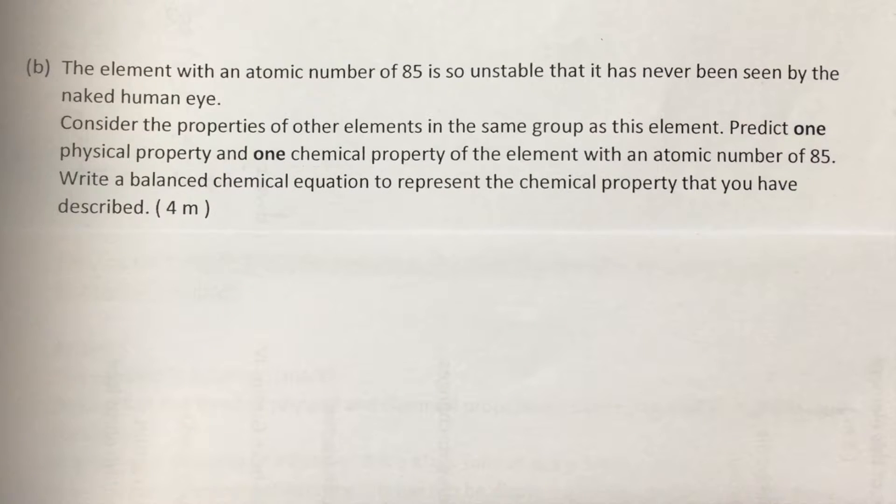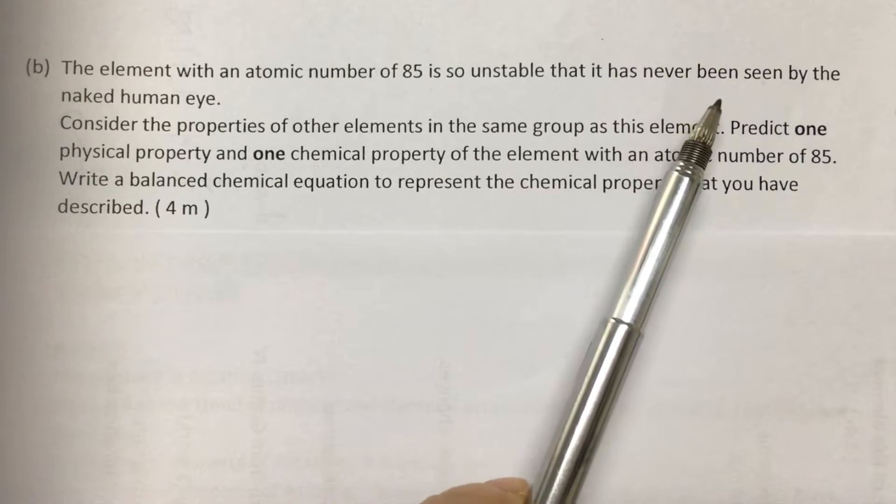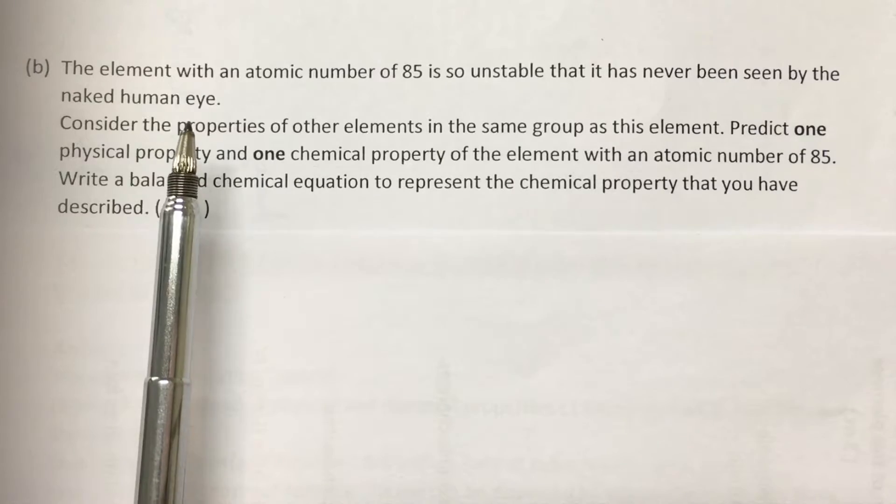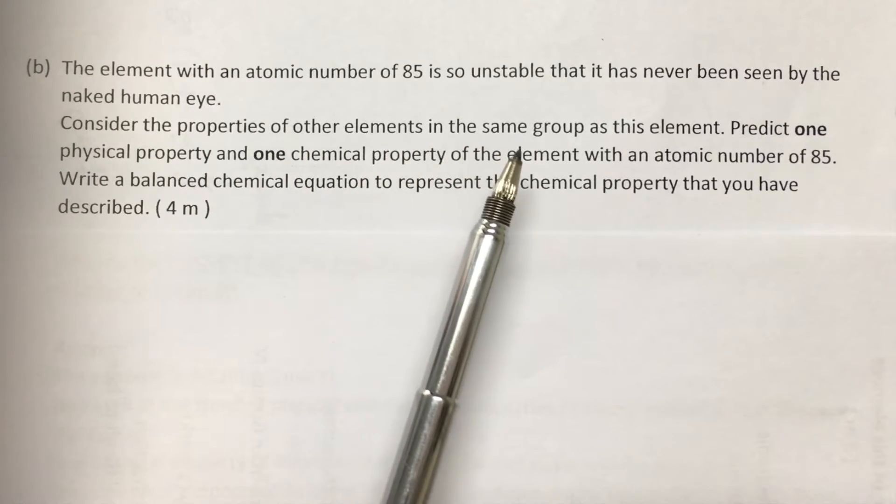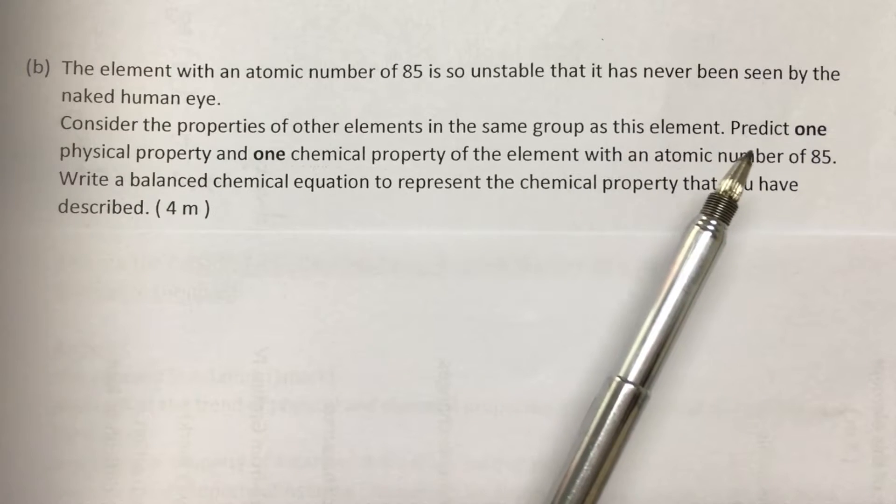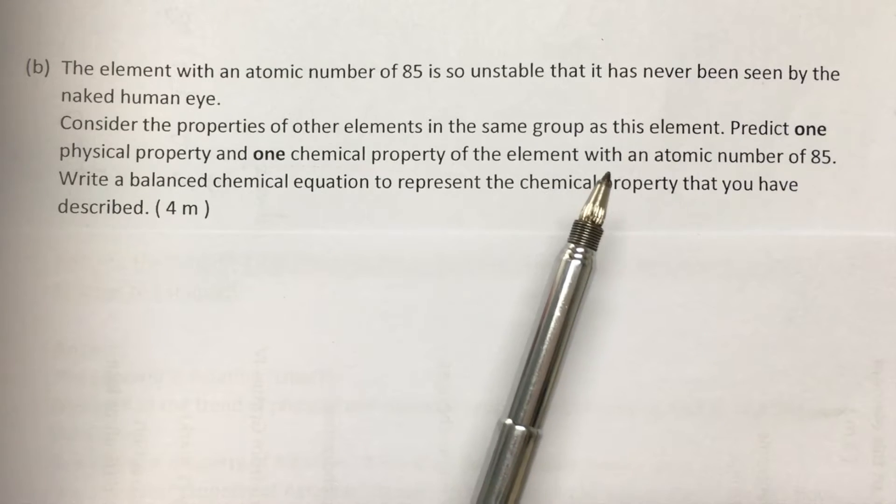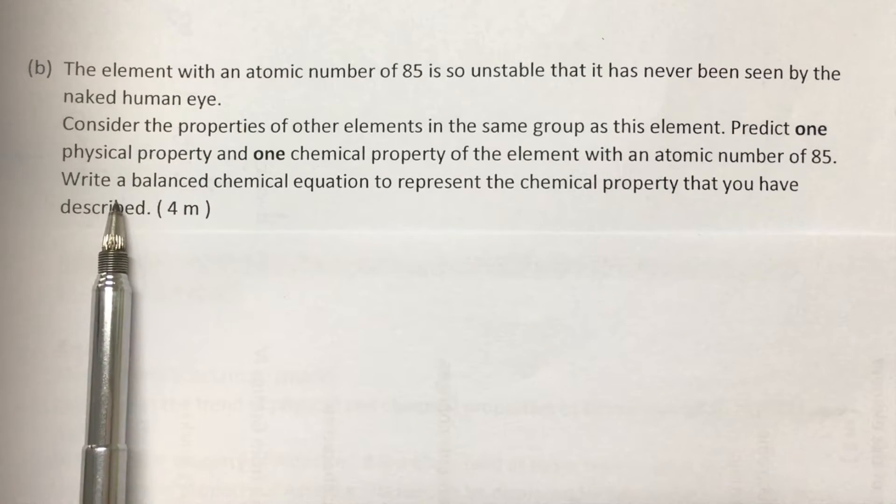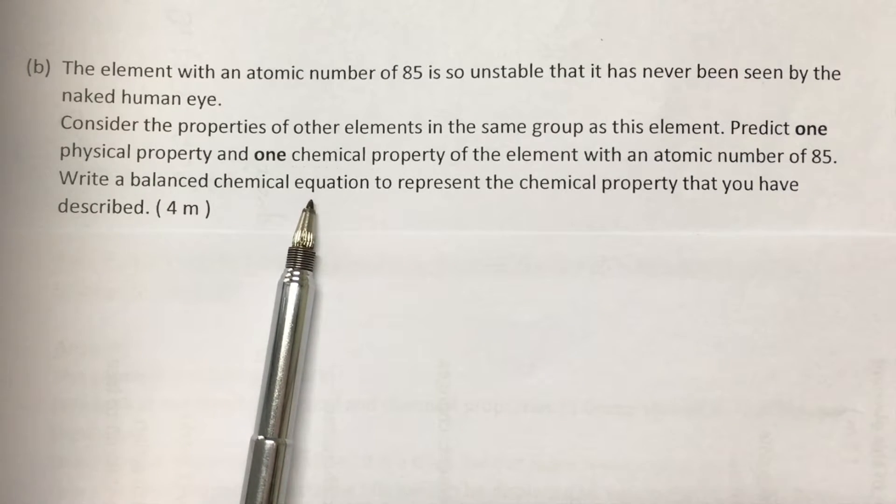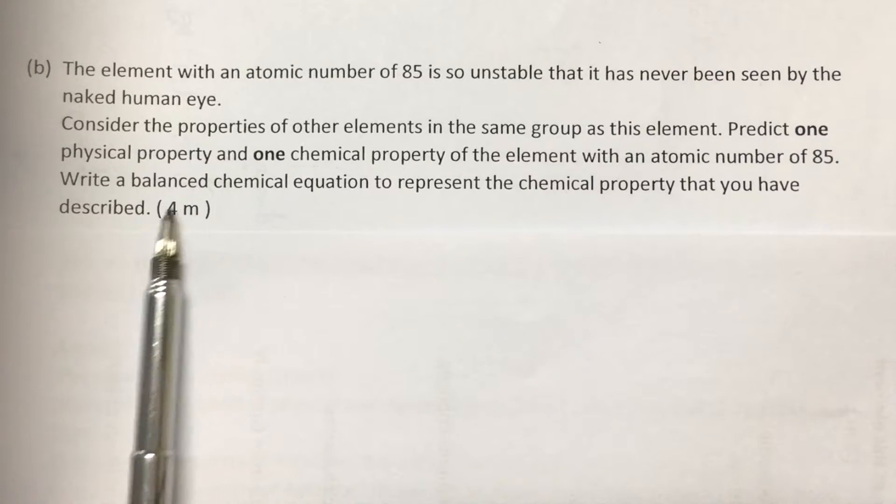Next, part B. The element with atomic number 85 is so unstable that it has never been seen by the naked human eye. Consider the properties of other elements in the same group as this element. Predict one physical property and one chemical property of the element with an atomic number of 85. Then, lastly we are supposed to write a balanced chemical equation to represent the chemical property that we have chosen. Four marks.